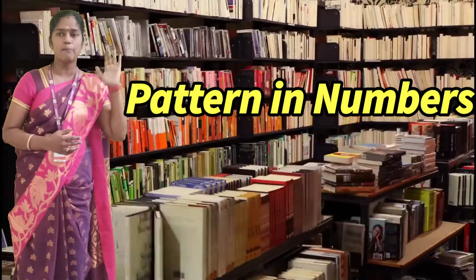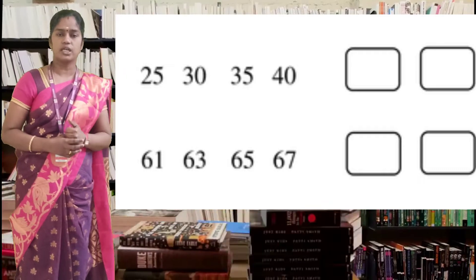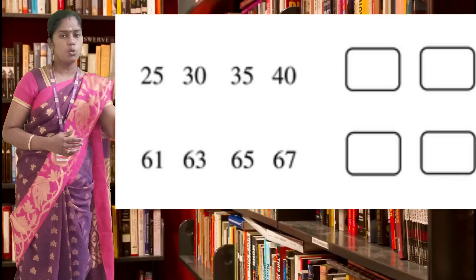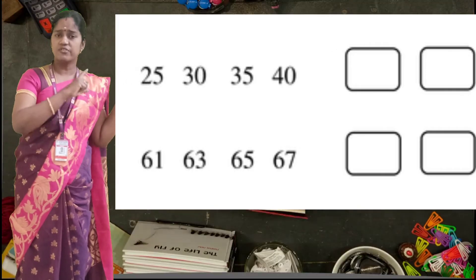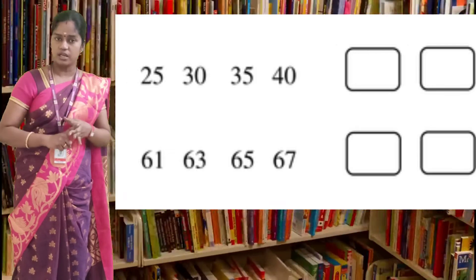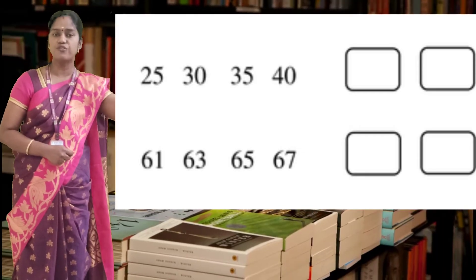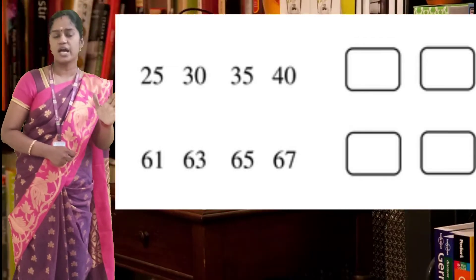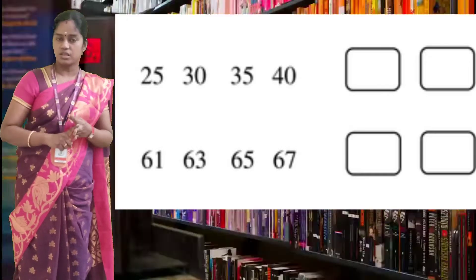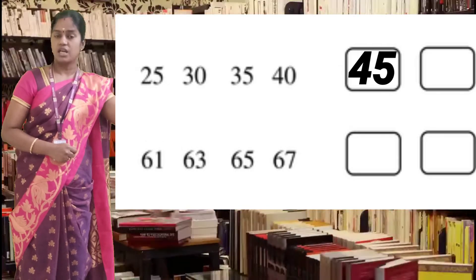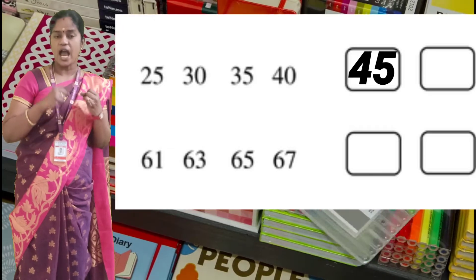Next: patterns in numbers. Look at the image — 25, 30, 35, 40 — and two boxes are given. What number comes in the two boxes? Find the rule followed here. What is the difference between 25 and 30? The difference is 5 — it has increased by 5. Between 30 and 35 the difference is also 5. So what number comes after 40? It is 45 — in the first box the number is 45, then add 5 more to get 50. So in the last box the number is 50.